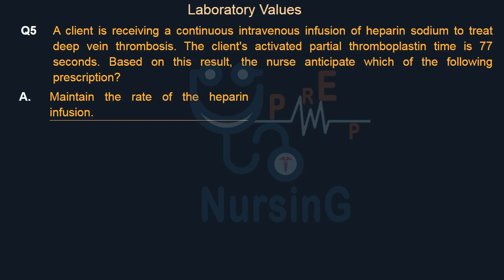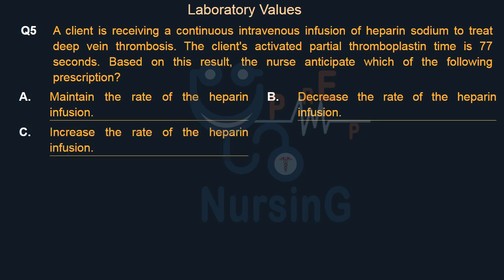Option A: Maintain the rate of the heparin infusion. Option B: Decrease the rate of the heparin infusion. Option C: Increase the rate of the heparin infusion. Option D: Discontinue the heparin infusion.